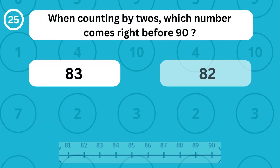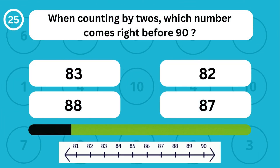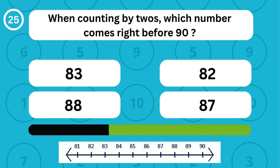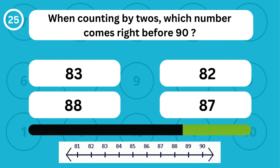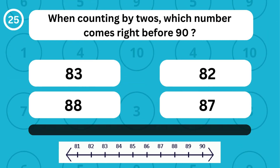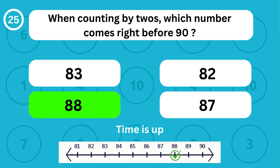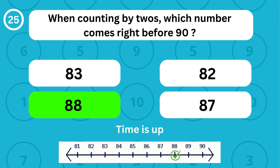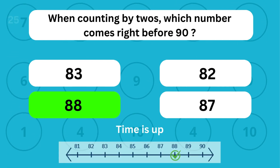When counting by twos, which number comes right before 90? The number 88 comes right before 90.